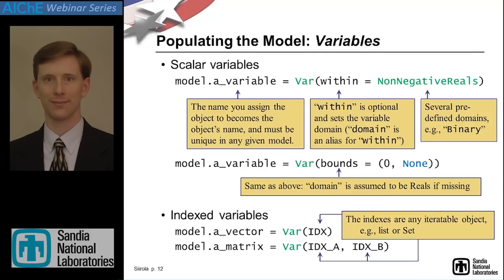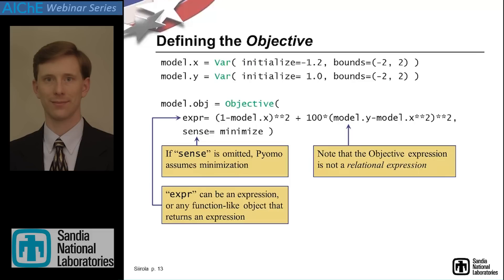Once we have variables, we define our objective. For an objective, it follows the same convention as variables: we say model.obj and assign to it an objective. When we construct the objective, we give it an expression — we can form expressions naturally in Python syntax — and we specify whether we're minimizing or maximizing.